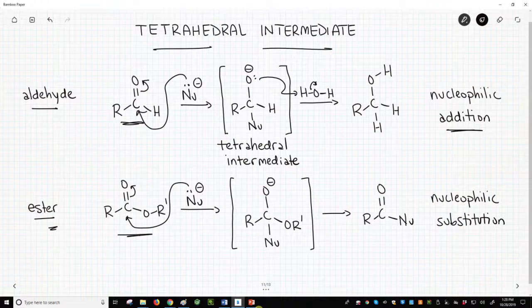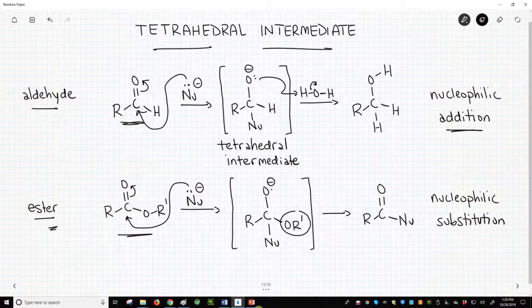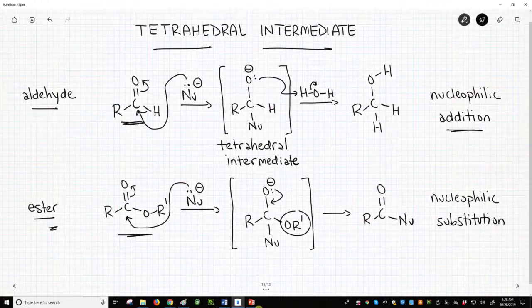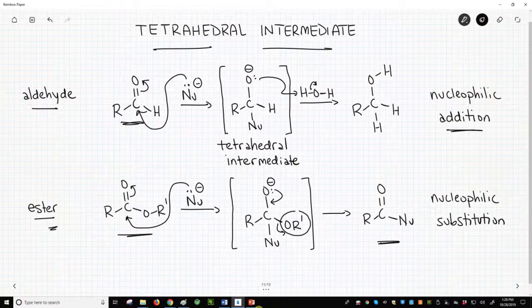This tetrahedral intermediate has a potential leaving group in the OR' group of the ester. The O-minus can swing a lone pair of electrons down and kick out this OR' group. This forms a new carbonyl compound.